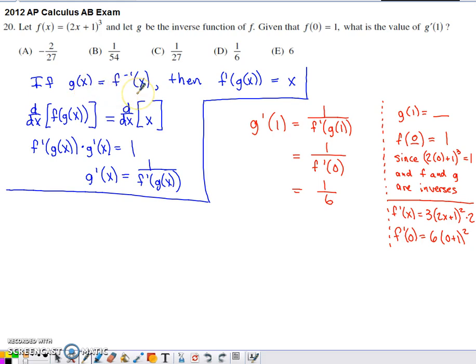So g is the inverse of f. When you put a function and its inverse into one another, when you compose a function and its inverse, they undo each other. Natural log of e to the x, square root of x squared. Those functions undo each other. Out comes the input x.